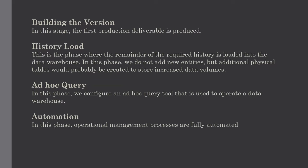The next stage is building the version. In this stage the first production deliverable is produced. This deliverable is the smallest component of a data warehouse, and this smallest component adds business benefits to the organization.